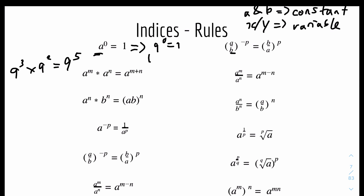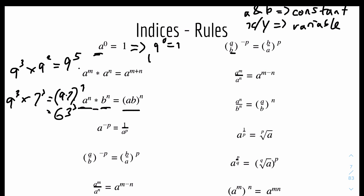The third rule is: A to the power of N times B to the power of N equals (AB) to the power of N. The difference from the previous rule is that the bases are different here — A and B — whereas before both bases were A. For example, 9 to the power of 3 times 7 to the power of 3 equals (9 times 7) to the power of 3, or 63 to the power of 3. You can check this in your calculator.